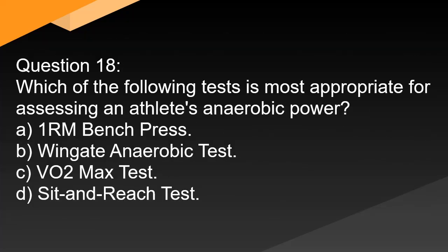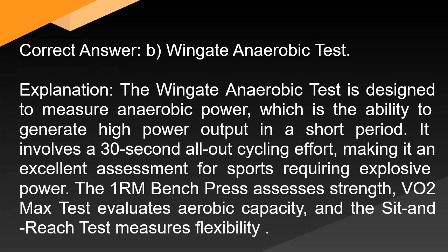Question 18: Which of the following tests is most appropriate for assessing an athlete's anaerobic power? A. 1RM Bench Press. B. Wingate Anaerobic Test. C. VO2max Test. D. Sit and Reach Test. Correct answer: B. Wingate Anaerobic Test. The Wingate Anaerobic Test is designed to measure anaerobic power — the ability to generate high power output in a short period. It involves a 30-second all-out cycling effort, making it an excellent assessment for sports requiring explosive power. The 1RM Bench Press assesses strength, the VO2max test evaluates aerobic capacity, and the Sit and Reach Test measures flexibility.